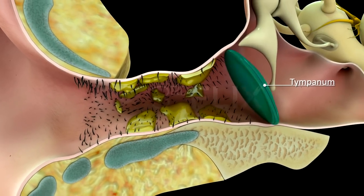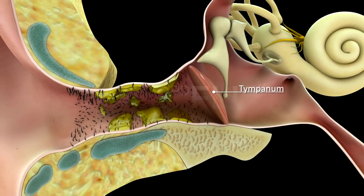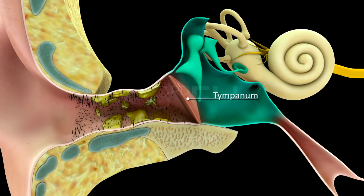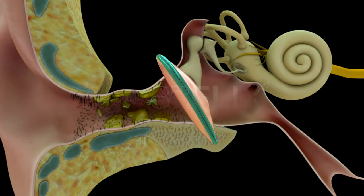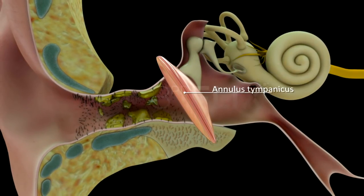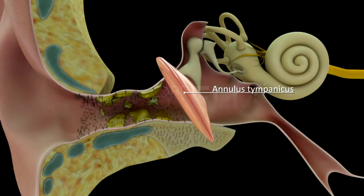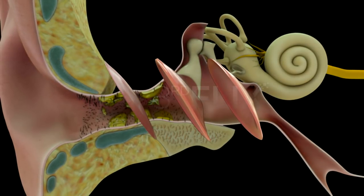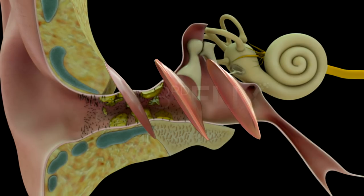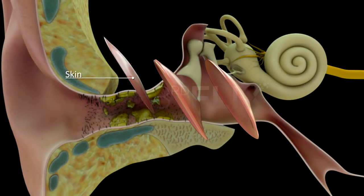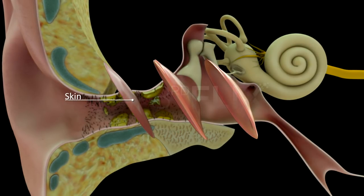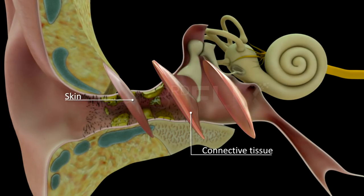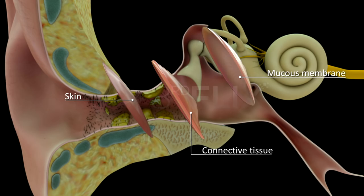The tympanum is a thin, transparent membrane that lies between the external and middle ear. It is stretched over a bony ring called the annulus tympanicus. The tympanum is made up of three layers: the outer layer of skin, a middle layer of connective tissue, and the inner layer of mucous membrane.